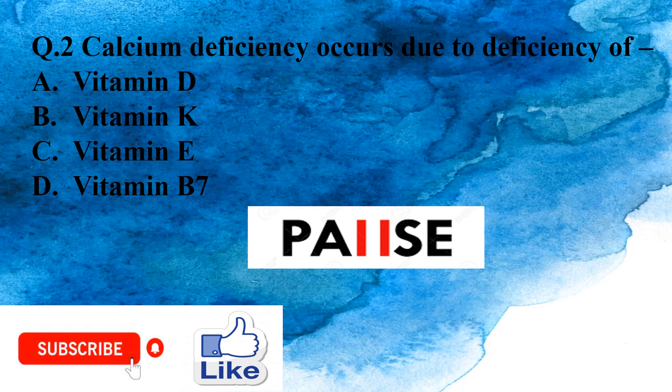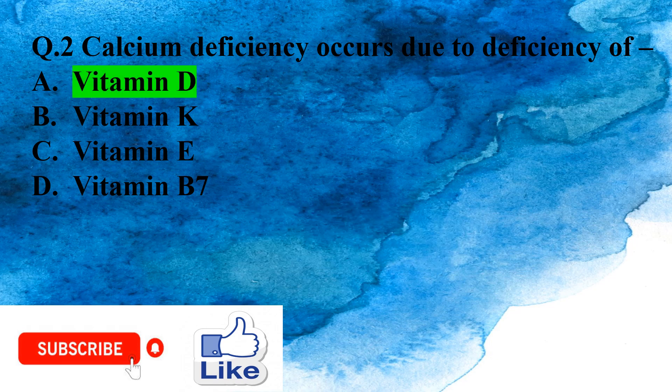Question 2: Calcium deficiency occurs due to deficiency of which vitamin? Option A: Vitamin D, Option B: Vitamin K, Option C: Vitamin E, Option D: Vitamin B7. The right answer is Option A, Vitamin D.